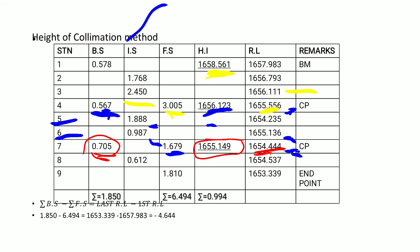That height of instrument, 1655.149, is used to reduce the levels for stations 8 and 9. So 1655.149 minus 0.612 gives the reduced level for station 8, and 1655.149 minus 0.180 gives 1653.339 for station 9, thereby completing the reducing of levels by the height of collimation method.